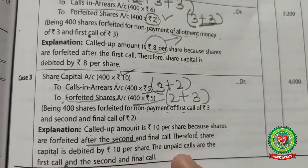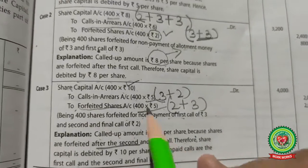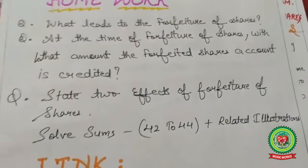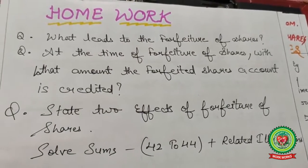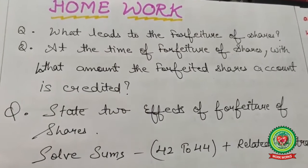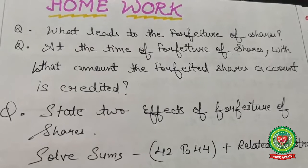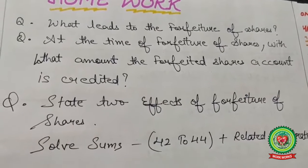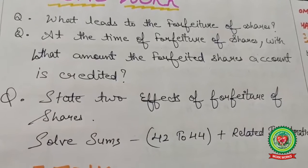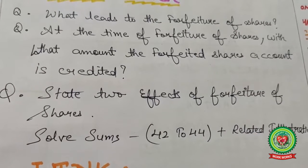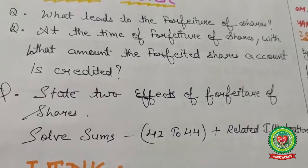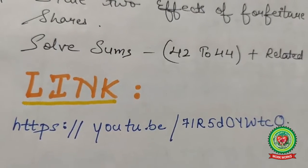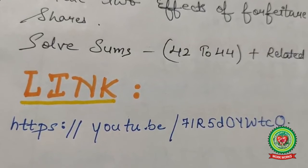Homework questions for students: What leads to forfeiture of shares? At the time of forfeiture, with what amount is the Share Forfeiture Account credited? State two effects of forfeiture of shares. Also solve sums number 42 to 44 and related illustrations from your book, and refer to the provided links for better understanding of the topic.